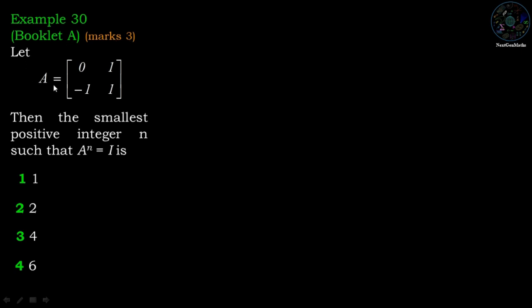Let matrix A equal 0, 1, minus 1, 1. Then the smallest positive integer n such that A power n equals I is: option 1 is n equals 1, option 2 is n equals 2, option 3 is n equals 4, option 4 is n equals 6.